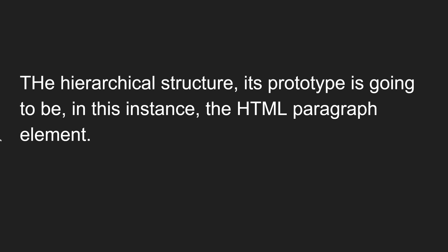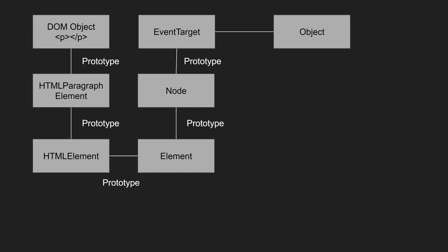Now let's look at the hierarchical structure. The prototype chain starts from the HTMLParagraphElement. The hierarchy goes like this: first is the DOM object we created using `document.createElement`. Its prototype is HTMLParagraphElement, then HTMLElement, then Element, then Node, then EventTarget, and at last that prototype is a plain JavaScript Object. This is the element object hierarchy.